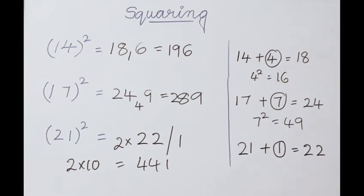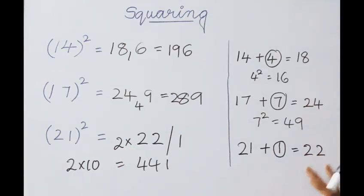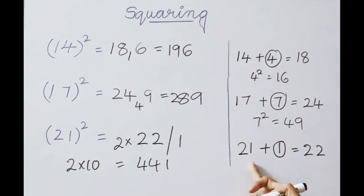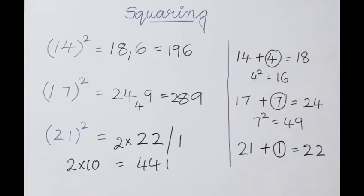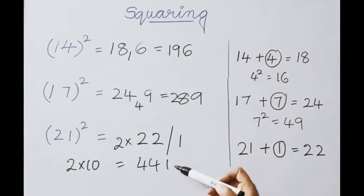To recap 21 squared: base is 20, which is 2 times 10, so we multiply the first part by 2. Excess value above 20 is 1; add it to 21 to get 22 (first part answer). 1 squared is 1 (second part). Multiply first part by 2: 2 times 22 is 44. So 21 squared is 441.